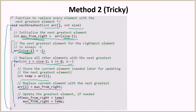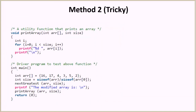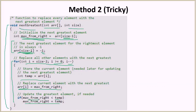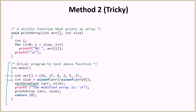That covers this method. In the driver function, we have the array, we calculate its size, then we call the next-greatest function which is the function we just discussed. After we get the modified array, we use a print-array function to iterate over the array and print all the elements.